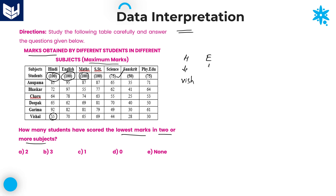Similarly, in English, who is the lowest? 95, 97, 78 — as of now 62 is lowest, and that is Deepak. Next subject, Mathematics — lowest marks: Baskar got 55. Looking at the remaining: 74, 69, 81, 65 — Baskar is lowest. In Social Studies, the values are 87, 77, 63, 81, 79, 69 — 63 is lowest, and that is Charu.